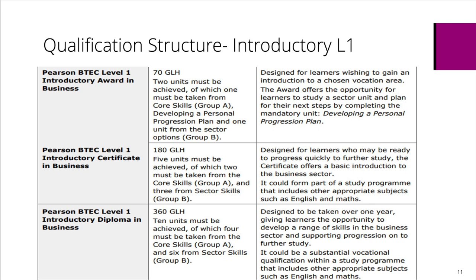Finally, we've got the introductory diploma with ten units. We've got more core units: being organised, developing a personal progression plan, working together, and researching a topic, plus six sector skills units. This is usually a full-time course delivered over one year, though some centres deliver it over two years as part of a fuller level one programme. So there are lots of options for you to use in your introductory level one programme.